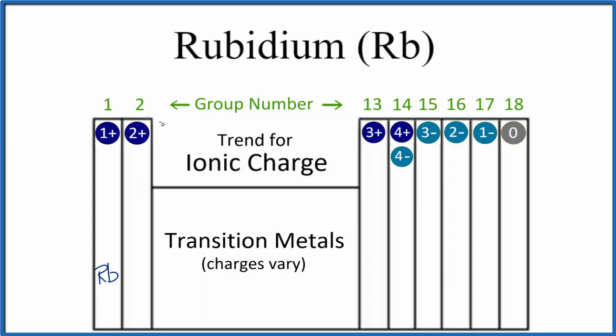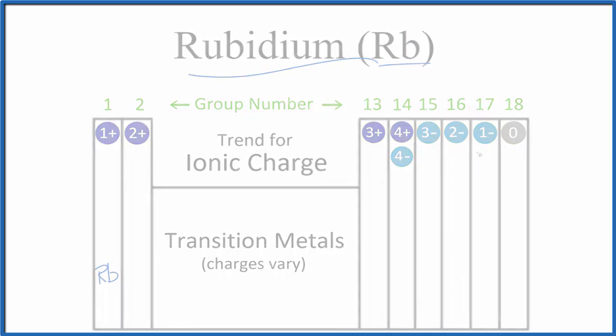So in answer to our question, rubidium is in group 1, so it forms ions that are 1+. This is Dr. B.C. with the charge of rubidium Rb. Thanks for watching.